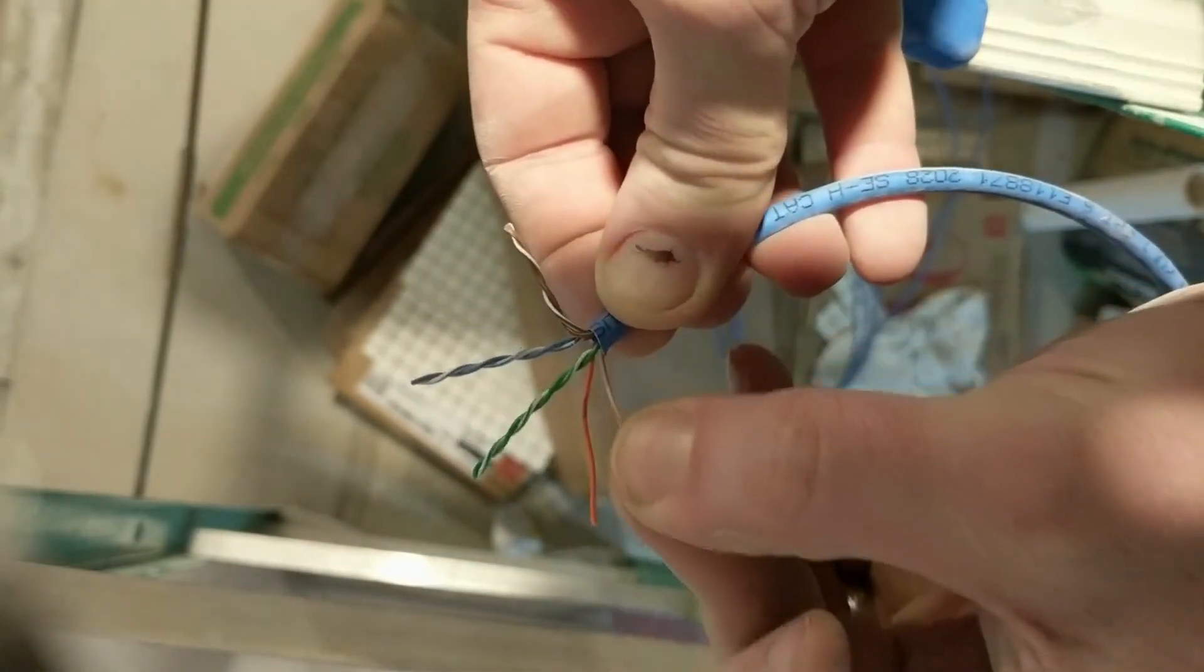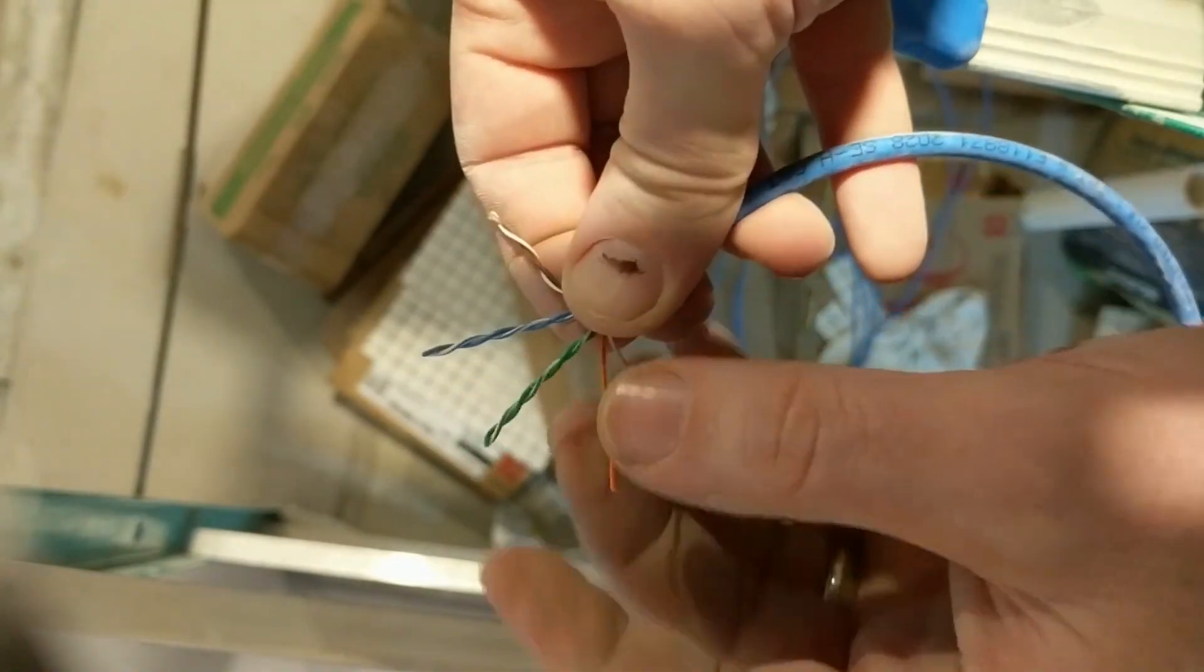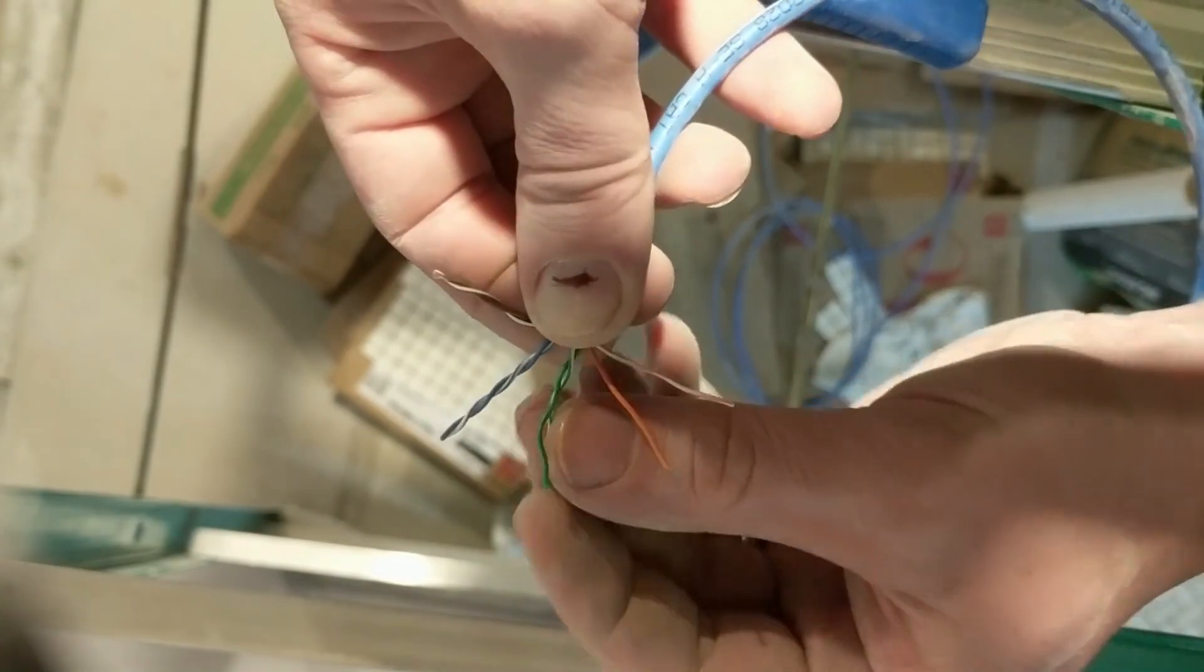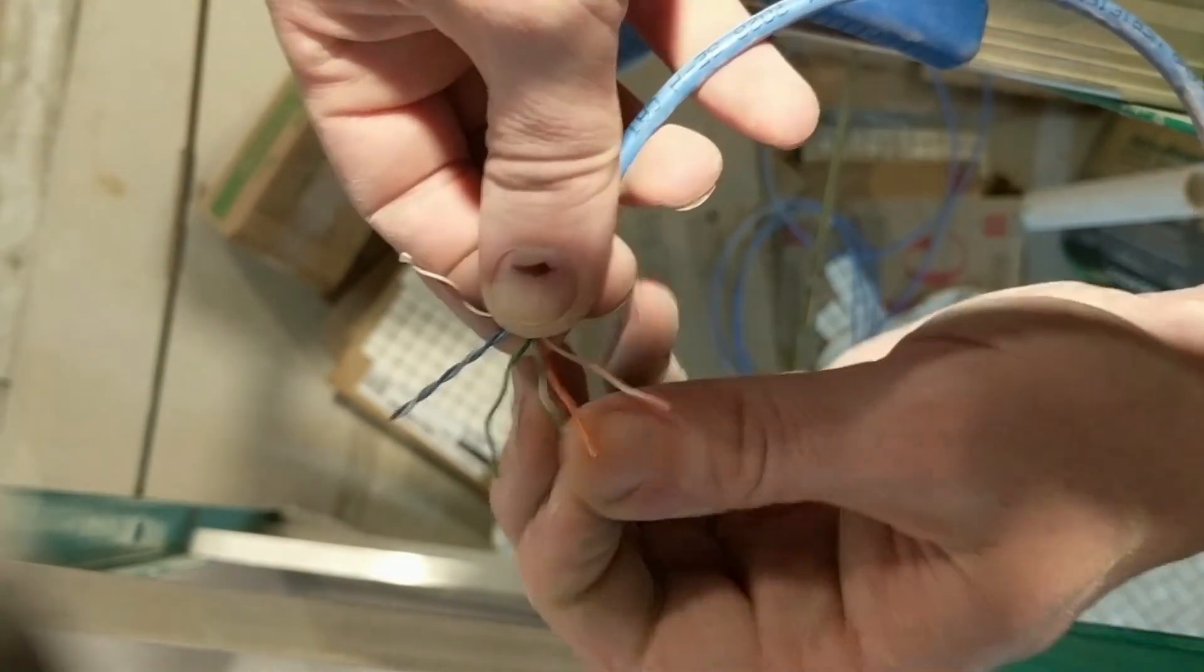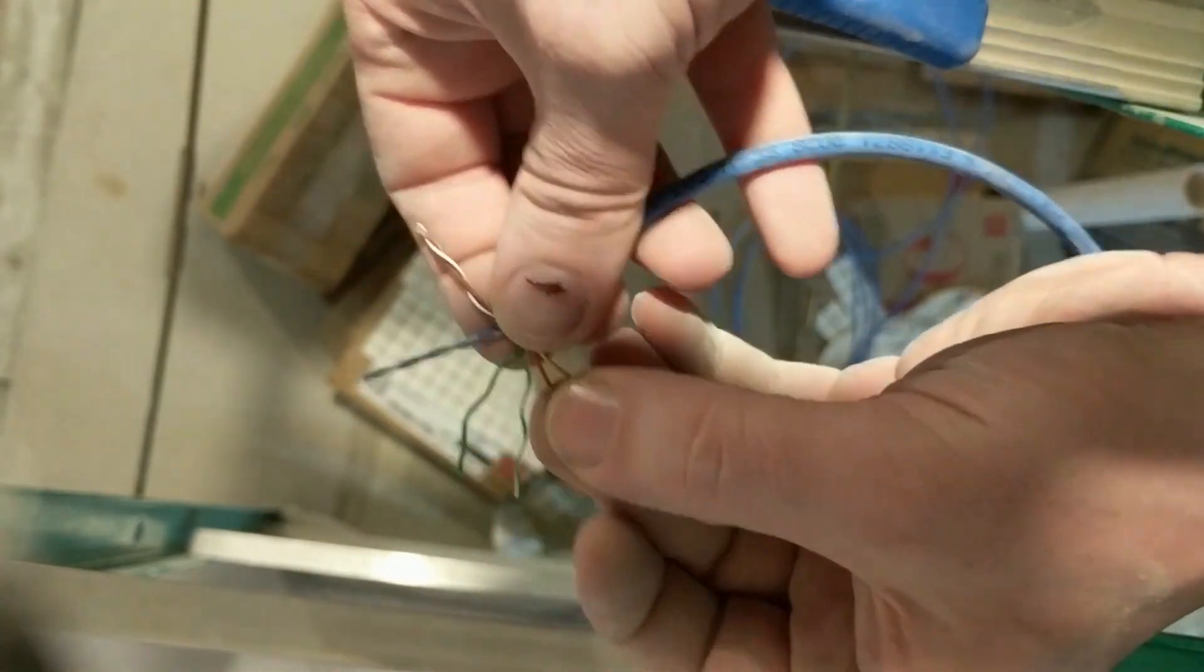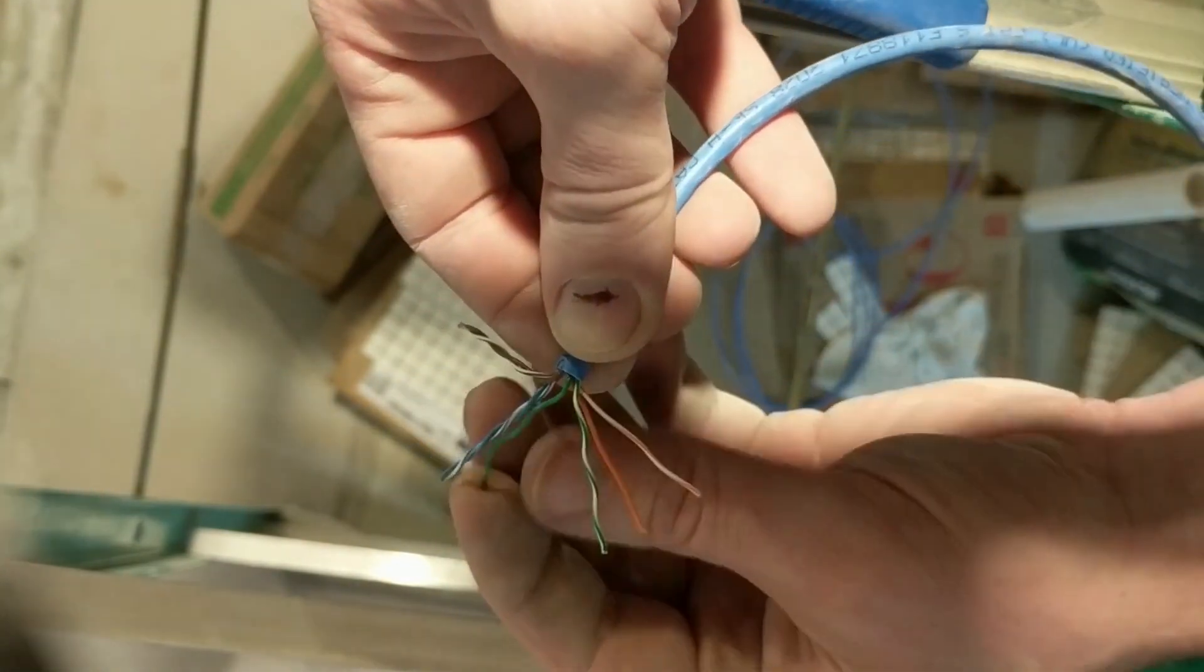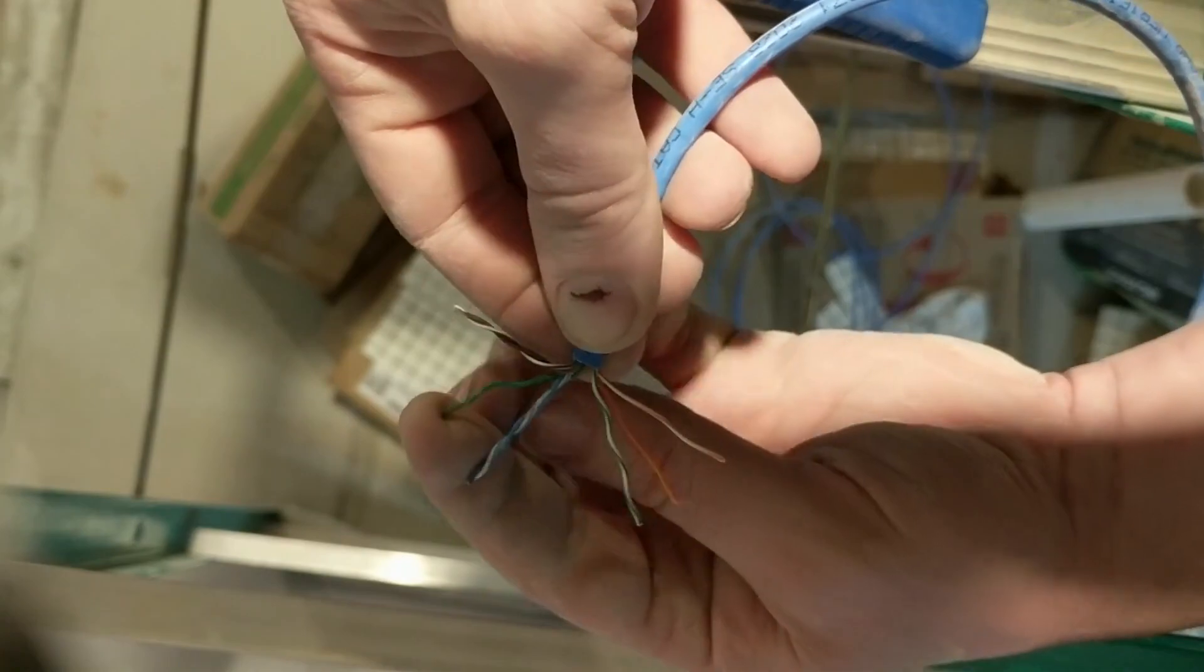I'll untwist the oranges first and straighten them out. I pinch them and pull with my finger and try to straighten them as much as I can. Then I untwist the greens. The greens have the white with the green stripe, but then the solid green goes on the other side of these two blues in the B configuration.